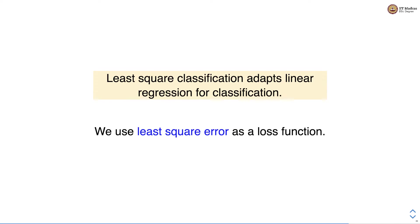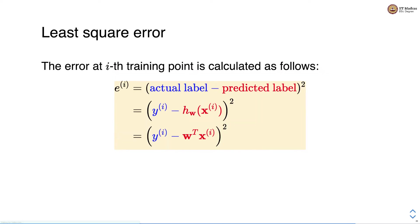Least square classification adapts linear regression for classification. It uses least square error as a loss function. All of you are familiar with least square error because we have studied this in the context of linear regression. The least square error at the i-th training point is calculated as the square of the difference between the actual label and the predicted label.